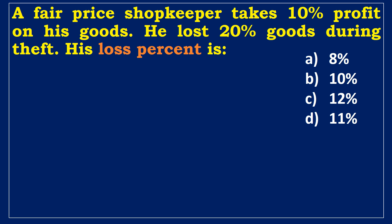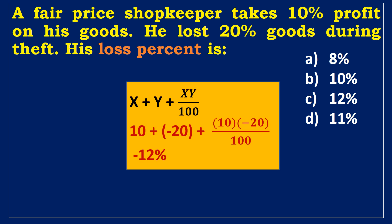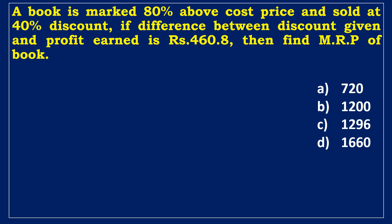Let's look at an example of the profit and loss concept. A fair price shopkeeper takes 10% profit on his goods. He lost 20% goods during the theft. His loss percent is. To solve this problem, first, we must understand that the shopkeeper made a profit of 10%, which is plus 10%. During the theft, shopkeeper lost 20%, which means minus 20%. According to the effective percentage formula, the net percentage between two percentages is plus 10 minus 20 plus 10 into minus 20 divided by 100. So, we get minus 12% which is a 12% loss.